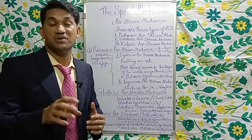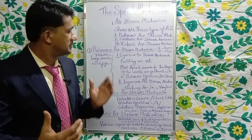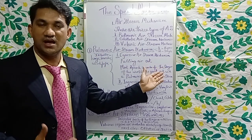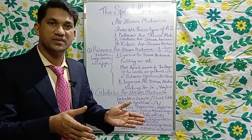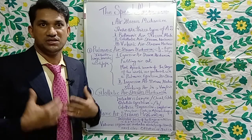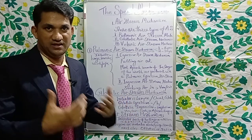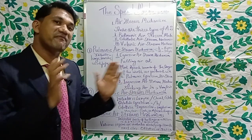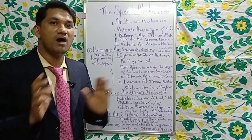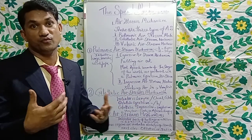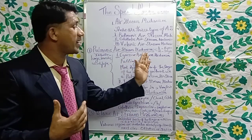The pulmonic air stream mechanism can again be divided into two: the egressive air stream mechanism and the ingressive air stream mechanism. The egressive air stream mechanism is letting air out — that is, puffing air out from inside the lungs. The air is pushed forth and puffed out, and sounds are produced by letting air go out of the lungs. That is known as the egressive air stream mechanism.